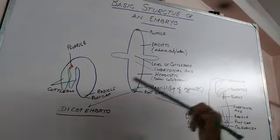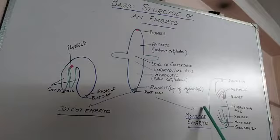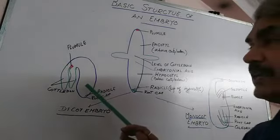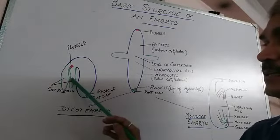Embryo may be dicot or monocot. In case of dicot embryo, two cotyledons are present.